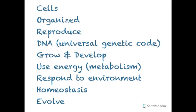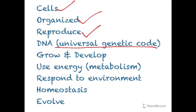First of all, we have cells. All living things are made of cells. All living things are organized — they have levels of organization. All living things reproduce, either sexually or asexually. All living things use DNA, the universal genetic code. All living things grow and develop. All living things use energy — we call this metabolism. All living things respond to the environment, use homeostasis to regulate internal balance, and all living things evolve over time.